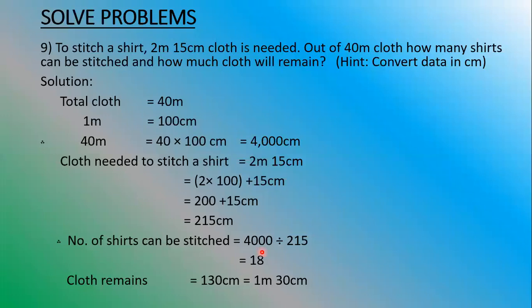When you copy this question into the fair book, you can do it yourself or copy from the rough book. Now for the calculation: 4000 divided by 215. We take the first 3 digits — 400 divided by 215 gives 1. Then 400 minus 215 gives 185. Bring down the 0, it becomes 1850. How many times does 215 go into 1850? 215 into 8 is 1720. When we subtract, we get 130 as the remainder.